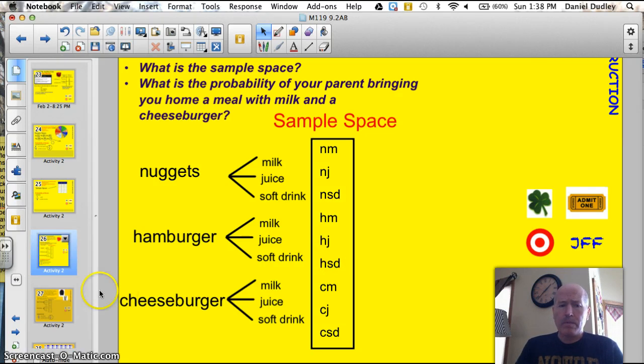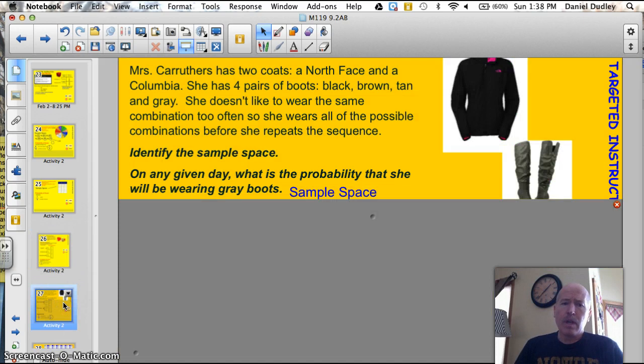I used my sample space to figure out how many different possible combinations I had and determined the probability. You with me? You ready to try one on your own? Here's the problem about Mrs. Carruthers. Mrs. Carruthers has two coats, a North Face and a Columbia. She has four pairs of boots. Black, brown, tan, and gray. She doesn't like to wear the same combination too often so she wears all the possible combinations before she repeats that sequence. Kind of like casing the socks. That's the kind of problem we're looking at here. Socks and shoes. So, identify the sample space and on any given day what is the probability that she will be wearing gray boots. Go ahead and take a few minutes and make this chart. This is the only one I'm going to ask you to do tonight. Go ahead.